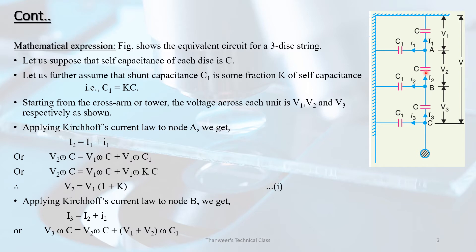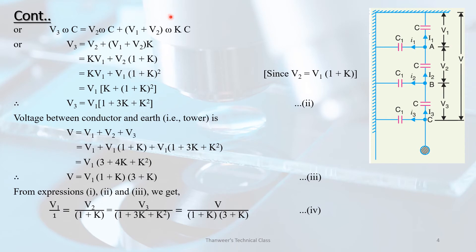Applying Kirchhoff's current law at node B: i3 is equal to i2 plus small i2. The shunt current small i2 is equal to (V1 + V2) times omega times C1. Since C1 equals K times C, the shunt current becomes (V1 + V2) into K times omega C.